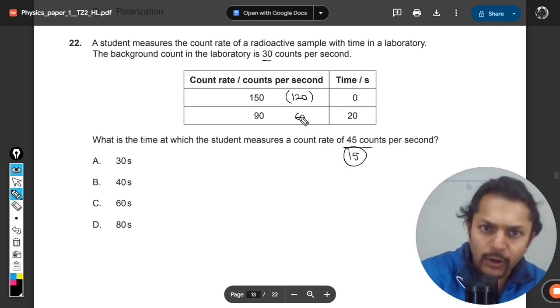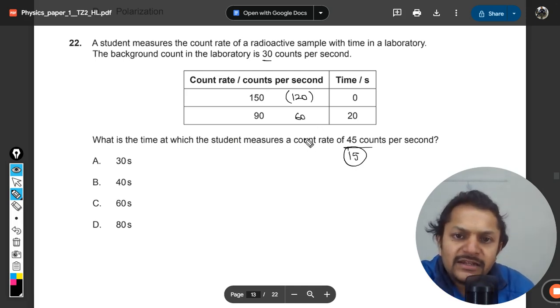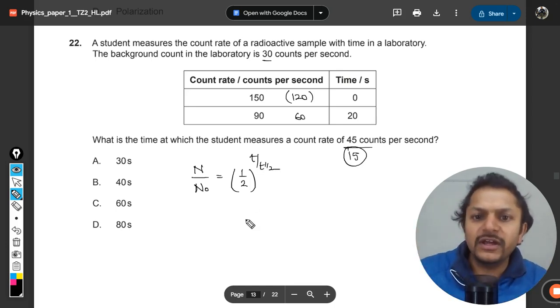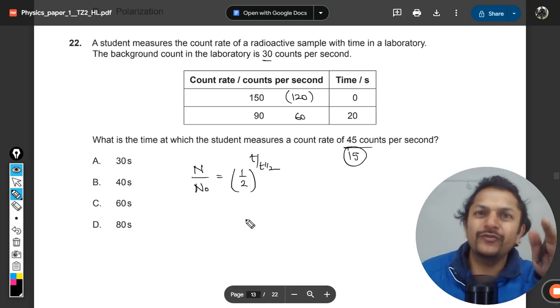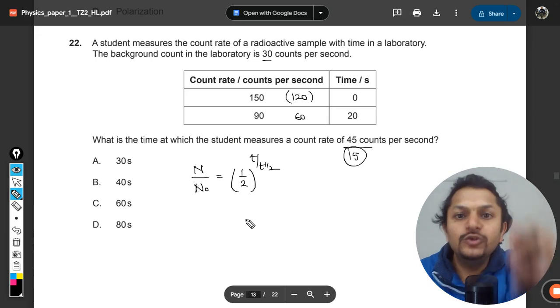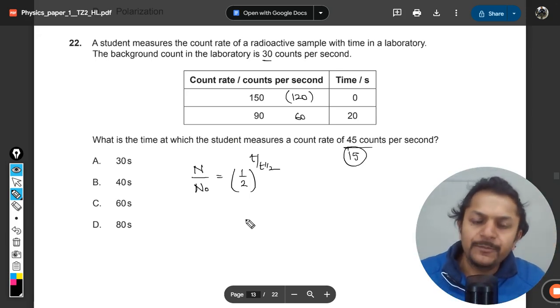We can say that there is a formula: n divided by n naught equals half raised to power t divided by t half. The formula is not given in the book or data booklet, but many IB paper two solutions use this formula, so it is authenticated.